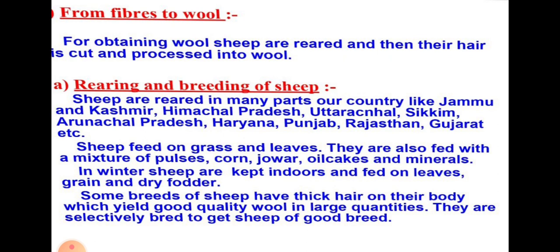Once the reared sheep have developed a thick coat of hair, the hair is cut off for getting wool. The cut-off wool coat of sheep is called fleece. The fleece consists of soft woolen fiber, and the fleece of sheep is usually kept in one piece. Sheep are reared in many parts of India, like Jammu and Kashmir, Himachal Pradesh, Sikkim, and Uttaranchal.